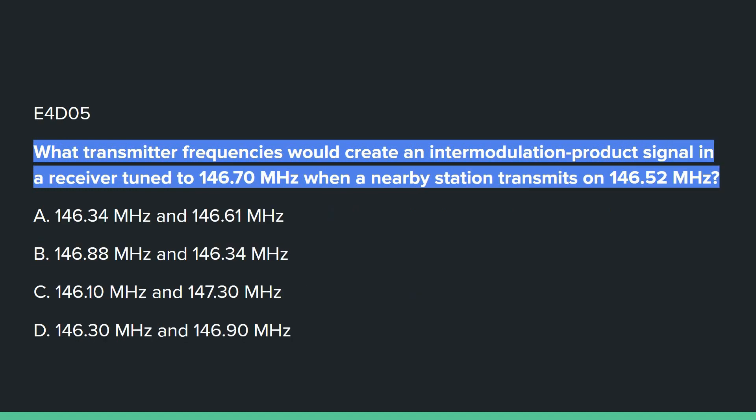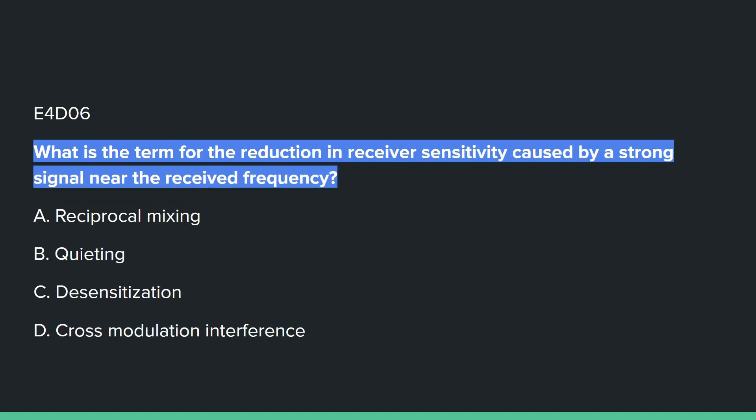E4D05: What transmitter frequencies would create an intermodulation product signal in a receiver tuned to 146.700 MHz when a nearby station transmits on 146.52 MHz? Answer A: 146.34 MHz and 146.61 MHz.